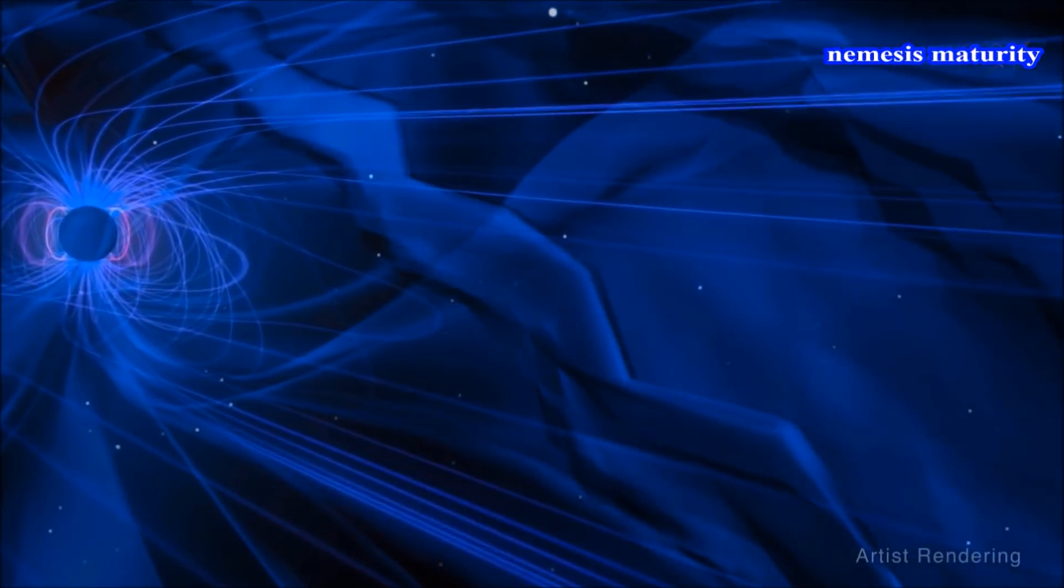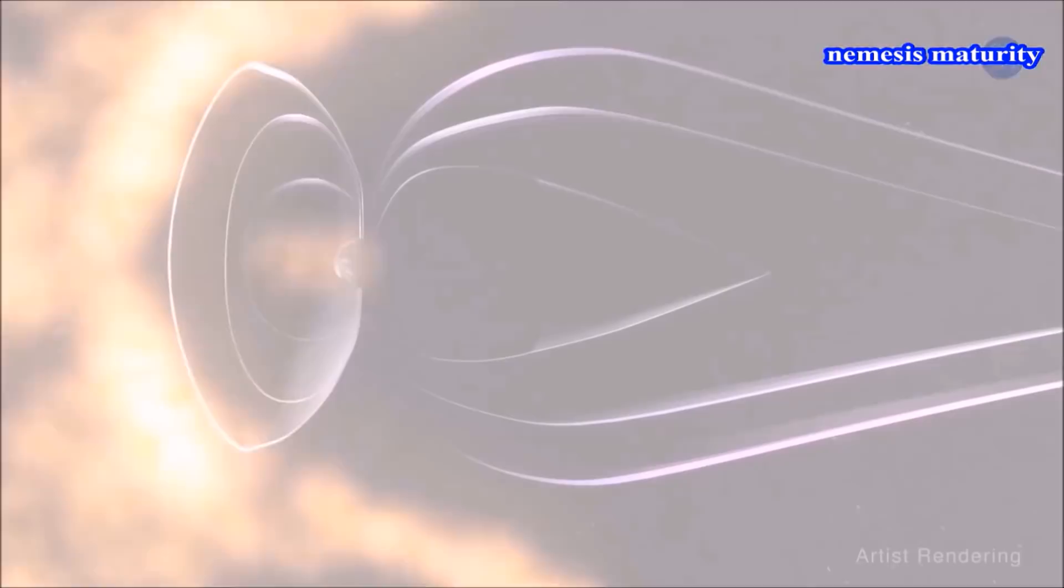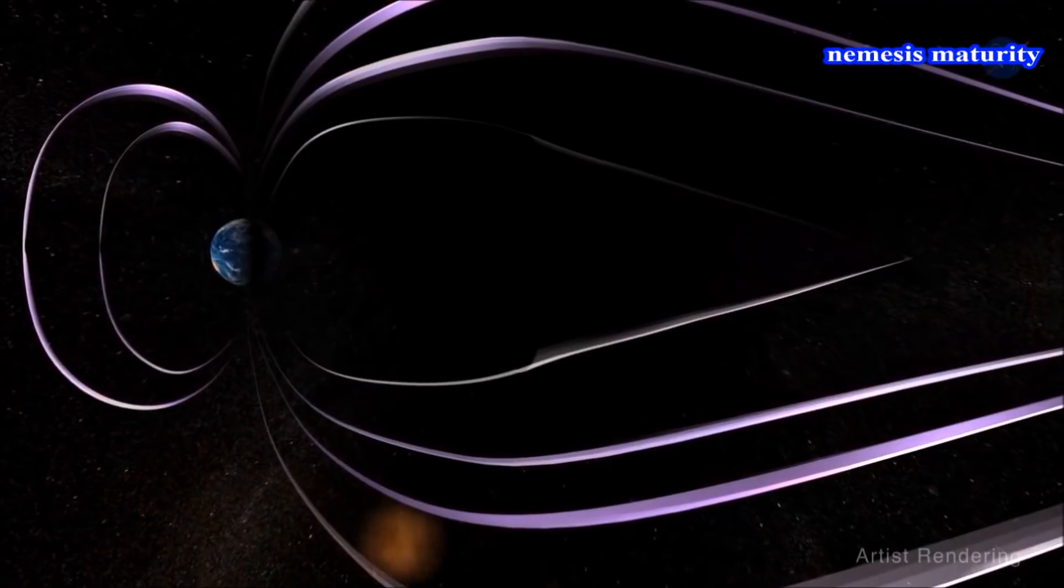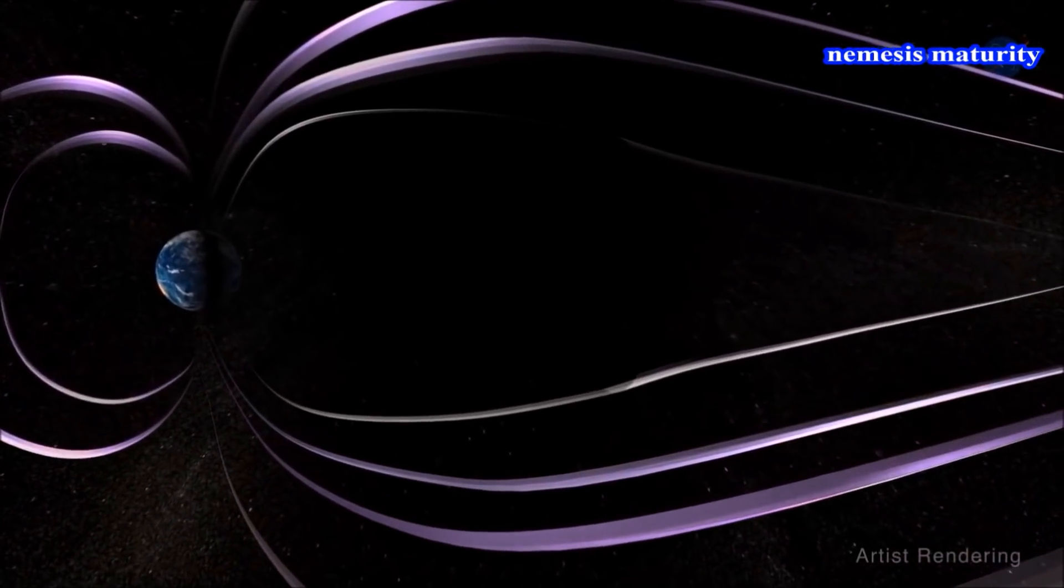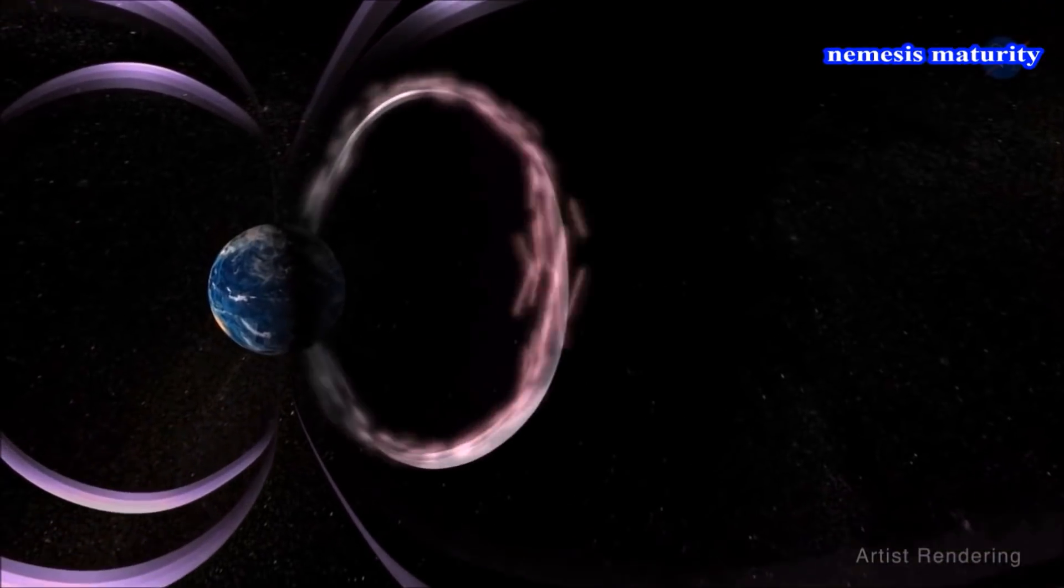With the Sun's magnetic field connecting to Earth's in this way, the fireworks start. Zesta says, the Earth's magnetosphere absorbs the incoming energy from the solar wind and explosively releases that energy in the form of geomagnetic storms and substorms.